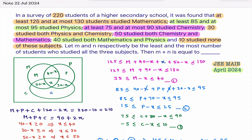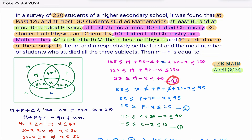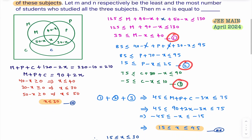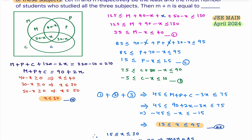For Chemistry, at least 75 and at most 90 students study it, giving equation 3 after simplification. Adding equations 1, 2, and 3 together, I get a combined inequality involving M + P + C.